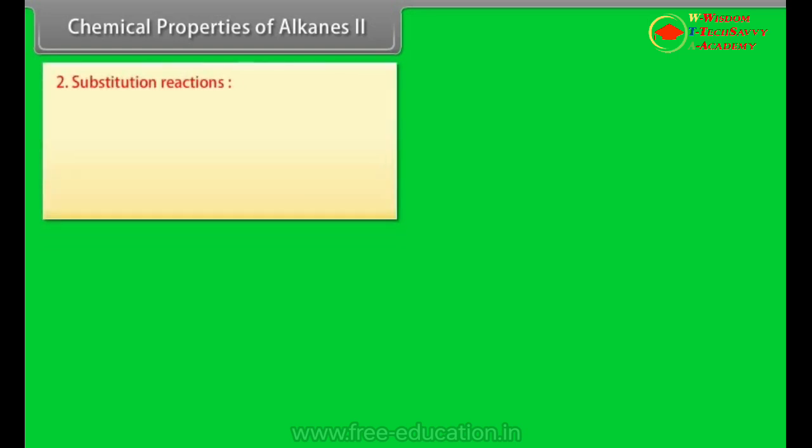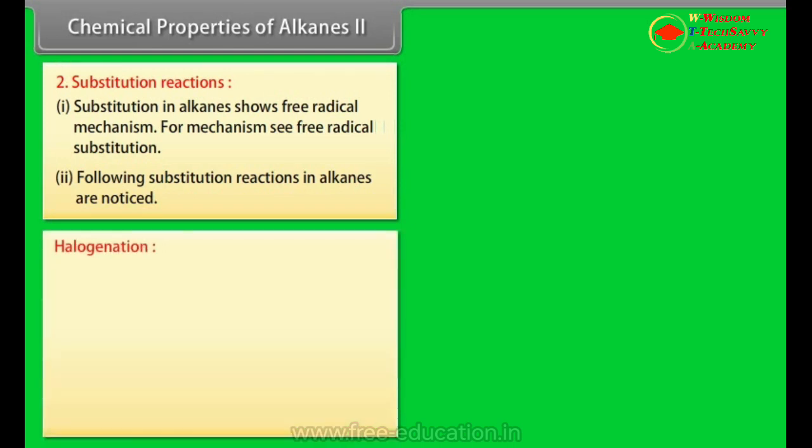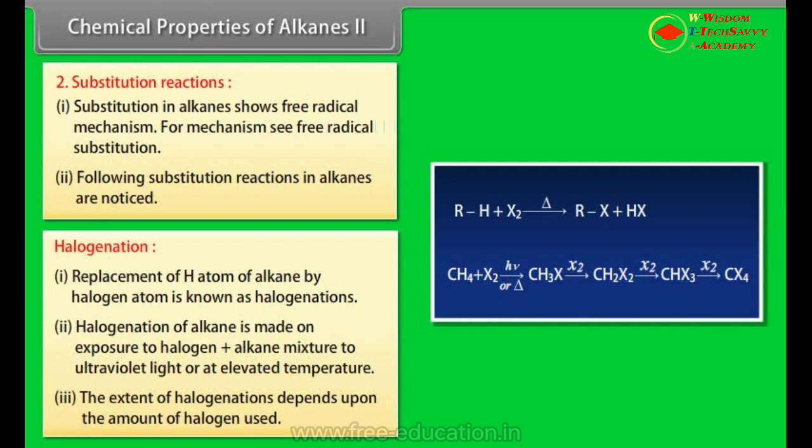Chemical properties of alkanes Part 2. Substitution reactions: Number 1: Substitution in alkanes shows free radical mechanism. For mechanism, see free radical substitution. Number 2: Following substitution reactions in alkanes are noticed. Halogenation: Number 1: Replacement of hydrogen atom of alkane by halogen atom is known as halogenation. Number 2: Halogenation of alkane is made on exposure to halogen plus alkane mixture to ultraviolet light or at elevated temperature. Number 3: The extent of halogenation depends upon the amount of halogen used.